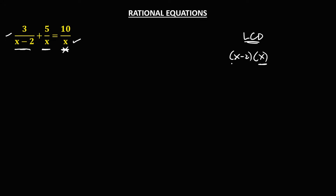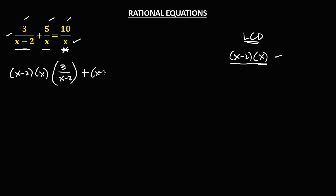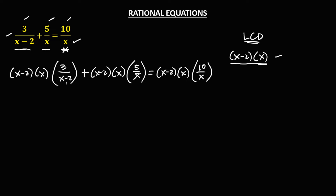So the LCD is x minus 2 times x. Then multiply this LCD to every term. So we have x minus 2 times x, then times 3 over x minus 2, then plus the LCD, so x minus 2 times x, then times 5 over x, then equals the LCD, that's x minus 2 times x, then times 10 over x.